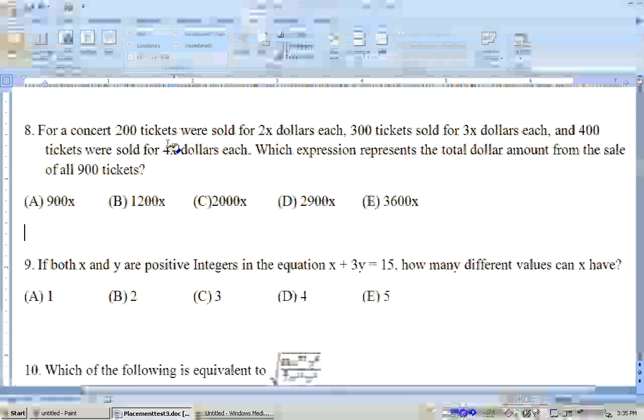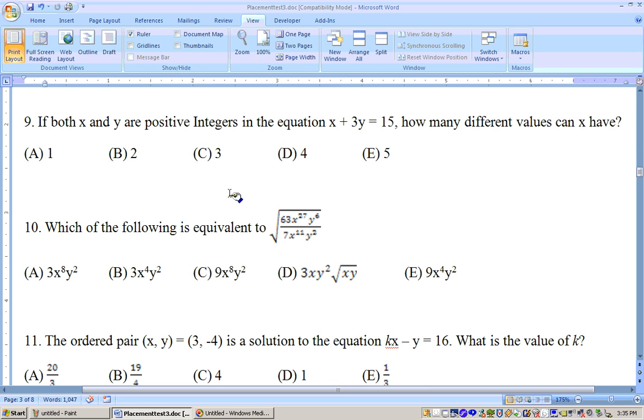On problem number 9, this is a different type of problem. It says, if both x and y are positive integers. What are we talking about positive integers? Well, greater than 0, like 1, 2, 3, 4, 5.